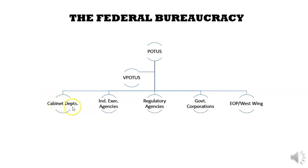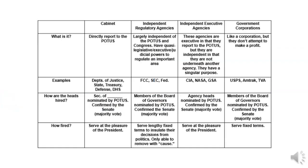The 15 cabinet departments, like the Department of Labor, the Department of Defense, the Department of Treasury. Then you have independent executive agencies like NASA, regulatory agencies like the FDA and the EPA, government corporations like the Post Office, and then the West Wing of the White House. All of these make up the bureaucracy. For independent executives there are tens of agencies, for regulatory agencies literally hundreds, tens of government corporations, and hundreds of people in the West Wing.